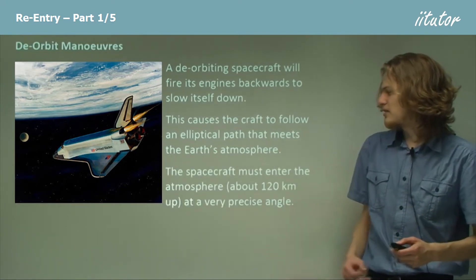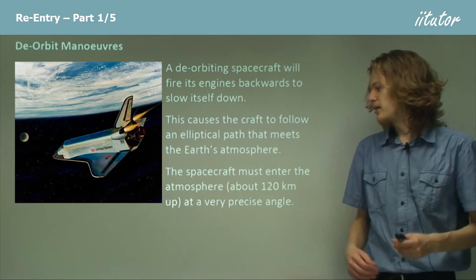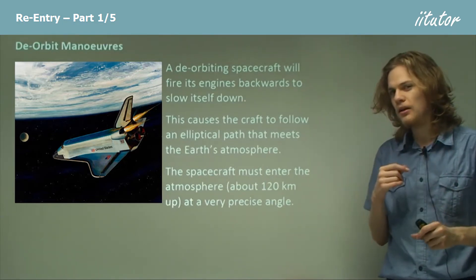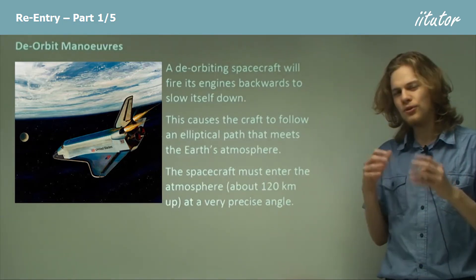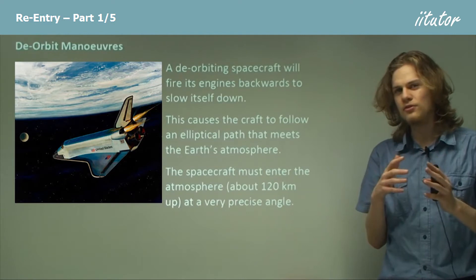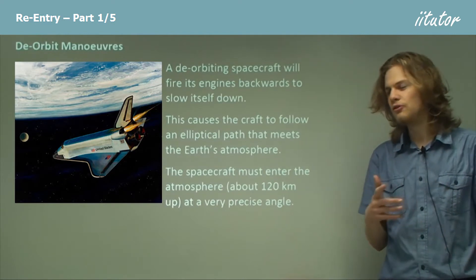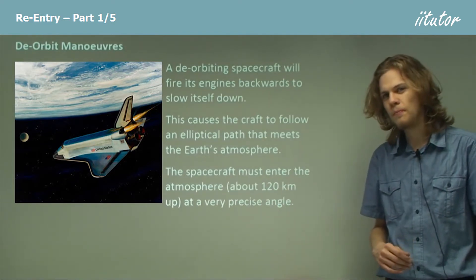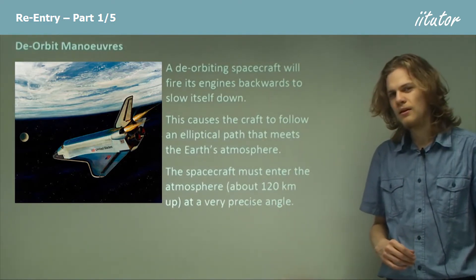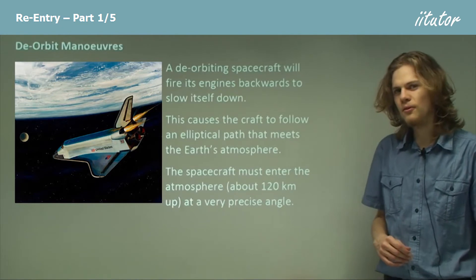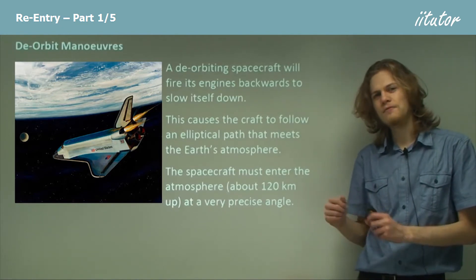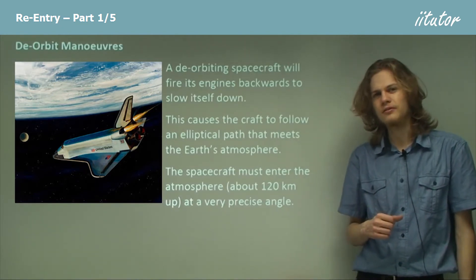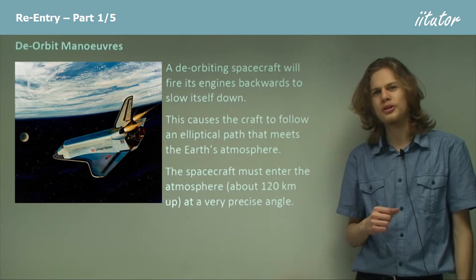The spacecraft has to enter the atmosphere at a very precise angle. We first start worrying about the atmosphere when we reach an altitude of about 120 kilometres. So how does the angle affect what happens to the de-orbiting spacecraft?